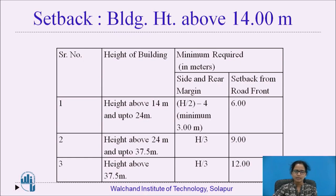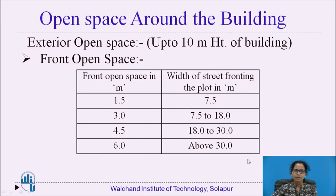Here are the requirements for open space around buildings. For exterior open space up to 10 meters building height, the front open space is 1.5 meters when the width of the street fronting the plot is up to 7.5 meters. If the front open space is 3 meters, the width of the street is 7.5 to 18 meters. If the front open space is 4.5 meters, the width of the street will be 18 to 30 meters, and for 6 meters, the width will be above 30 meters. Every room intended for human habitation shall have an interior or exterior open space, which may also be a veranda.